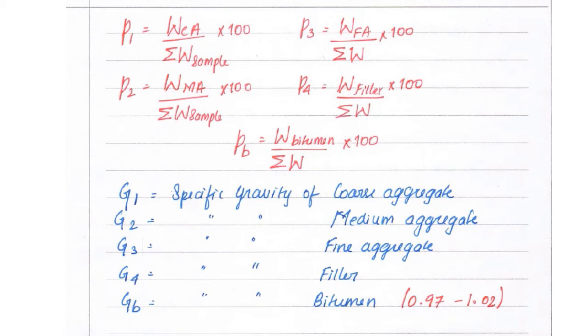P1 = Wca/(ΣW sample) × 100. Likewise, P2 = Wma/(ΣW sample) × 100. G1 = specific gravity of coarse aggregate, G2 = medium aggregate, G3 = specific gravity of fine aggregate, G4 = specific gravity of filler, and Gb = specific gravity of bitumen.